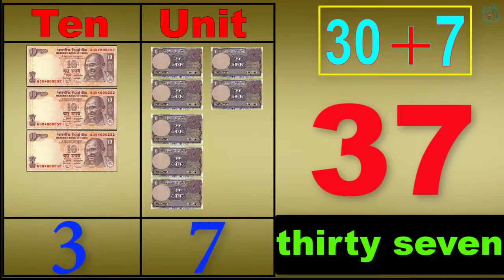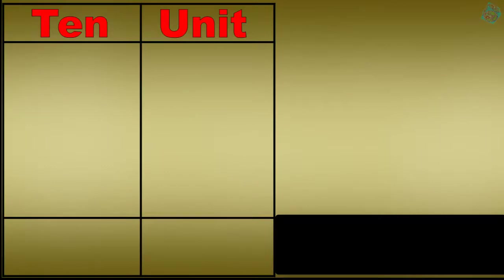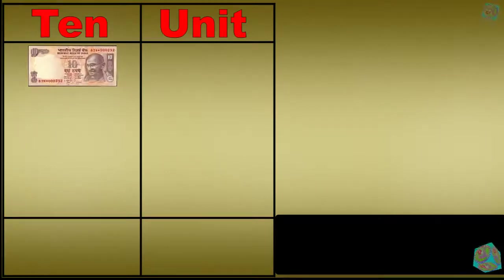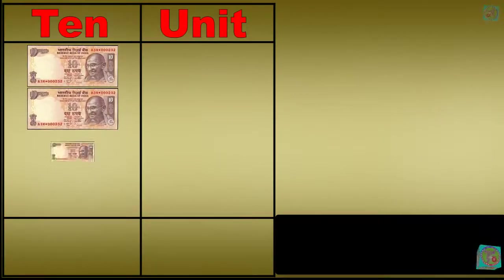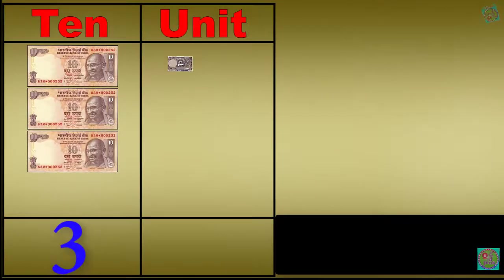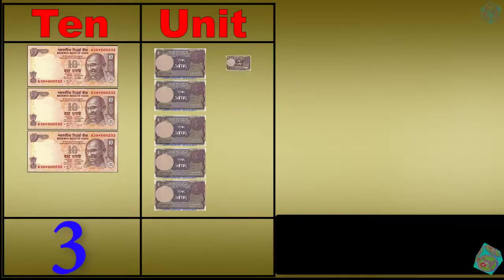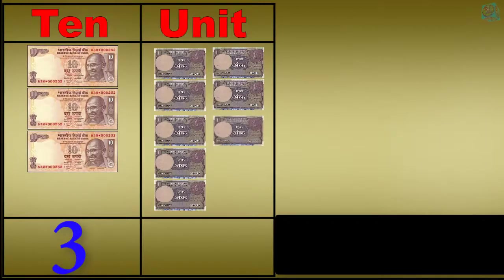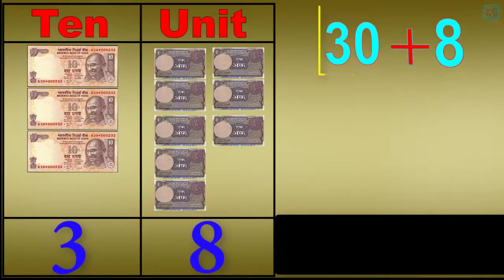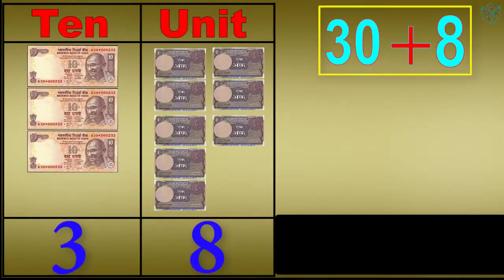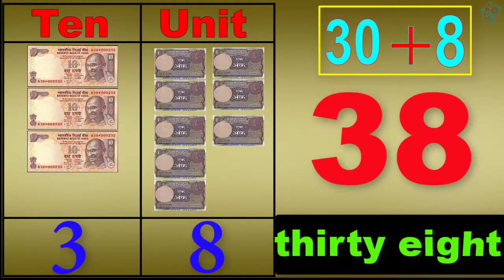1 ten, 2 tens, 3 tens, 3 tens 1 unit, 3 tens 2 units, 3 tens 3 units, 3 tens 4 units, 3 tens 5 units, 3 tens 6 units, 3 tens 7 units, 3 tens 8 units. 30 plus 8 equals 38. T-H-I-R-T-Y-E-I-G-H-T, 38.